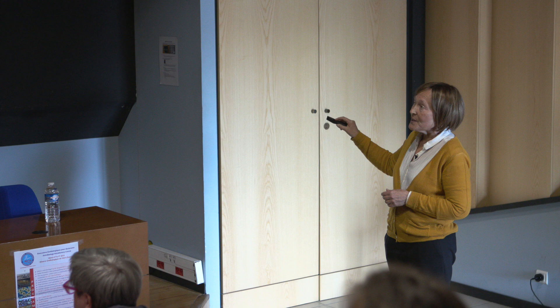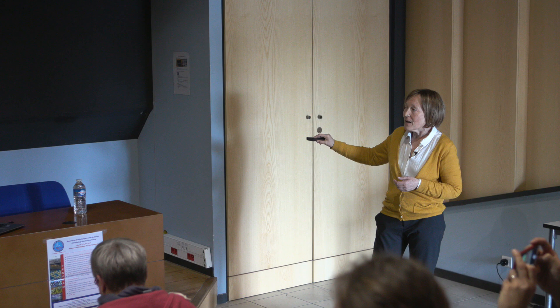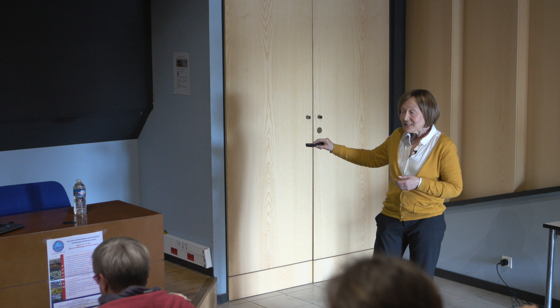The energy arrives from the sun to the earth at every latitude, but at the poles this radiation is spread over a large area, meaning that each point of the surface receives a weak amount of energy. On the contrary, at the equator the radiation focuses on a small area, meaning that each point receives a big amount of energy. And that creates an asymmetry between the equator and the poles.